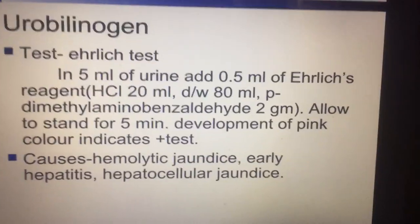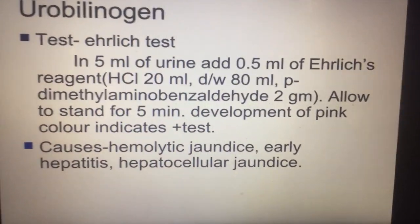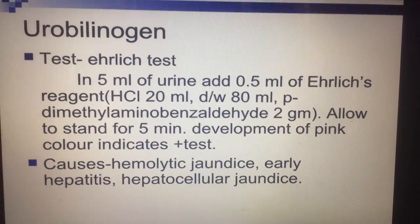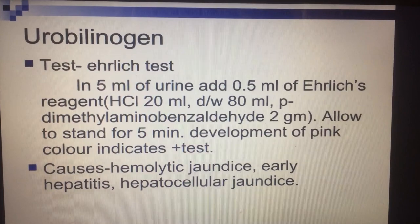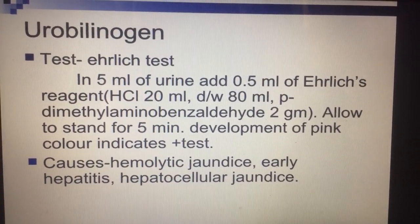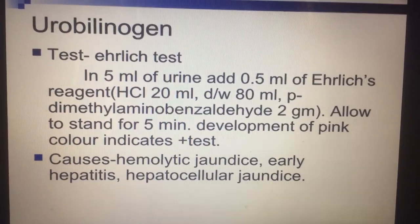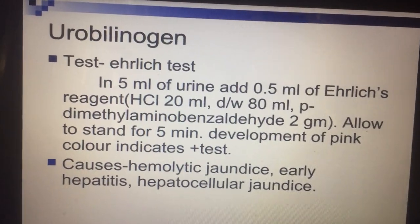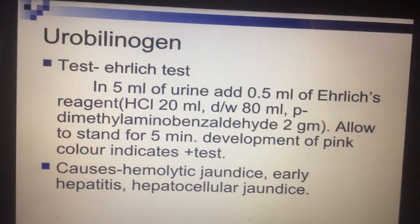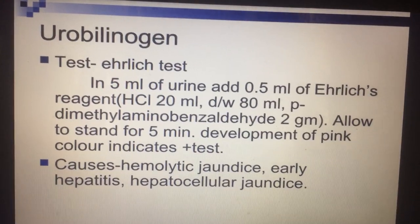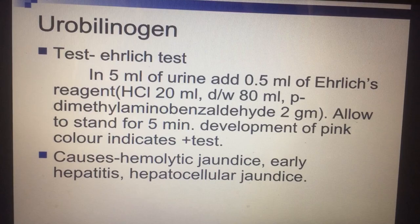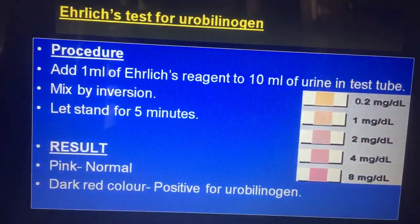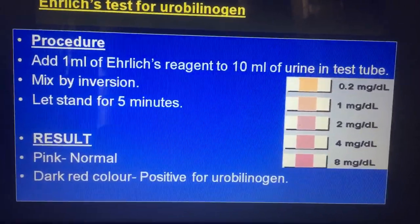For detecting urobilinogen, there is a test called the Ehrlich's test, in which the Ehrlich reagent is used. You take 5 ml of urine and add 0.5 ml of Ehrlich's reagent and look for the presence of urobilinogen. Urobilinogen will be strongly positive in hemolytic jaundice and in the early stage of hepatitis, called hepatocellular jaundice. It will be totally absent in obstructive jaundice.